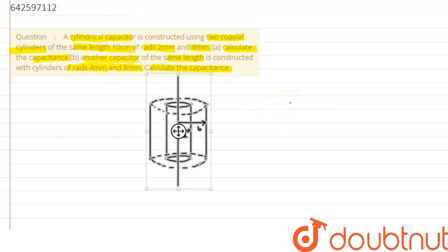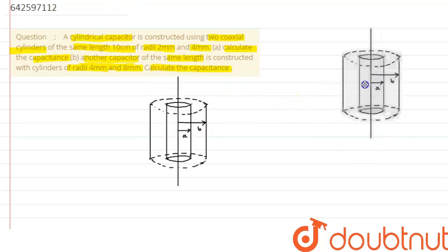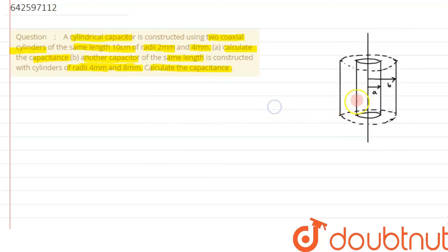If we try to analyze the given situation, we have been given two coaxial cylinders as we can see in the figure and we have supposed that one is having a radius of A and the outer cylinder is having a radius of B.